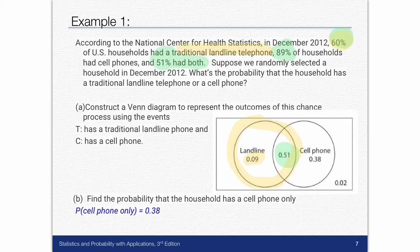Then I look at the next thing it tells me. 89 percent of the households had cell phones. That's this whole circle. It has to add up to 89 percent. I already know the 51 percent is accounted for. So I take 0.89 and I subtract 0.51 and I get 0.38.